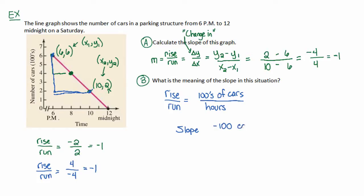So it's negative 100 cars over hours, and that's actually read as cars per hour. So this means that the parking lot or parking structure is losing 100 cars every hour. It's not like they're losing it - just 100 cars leave every hour.